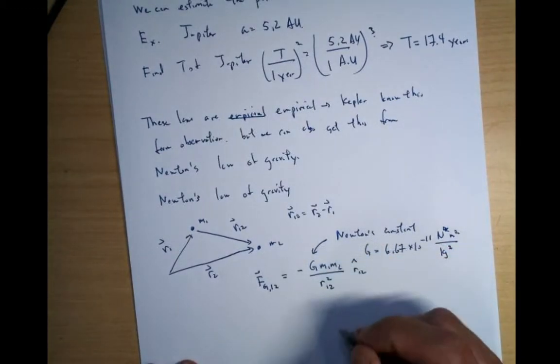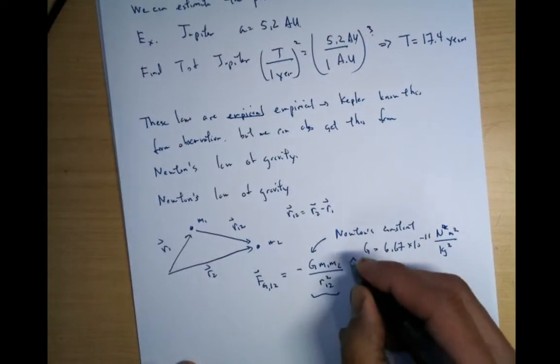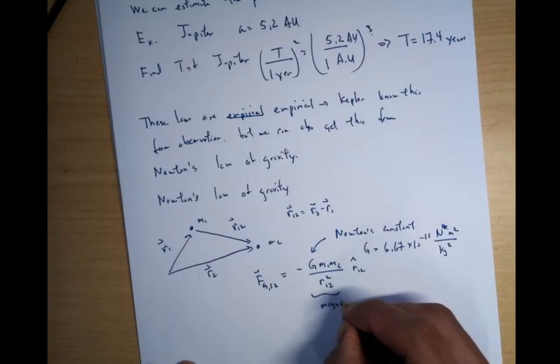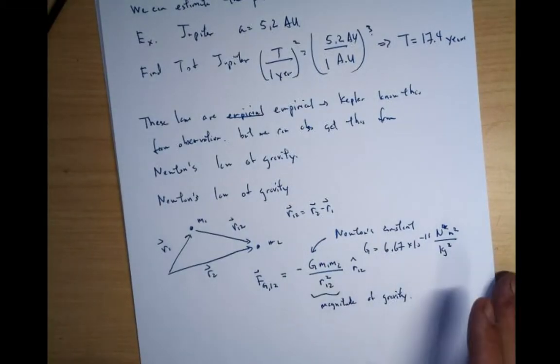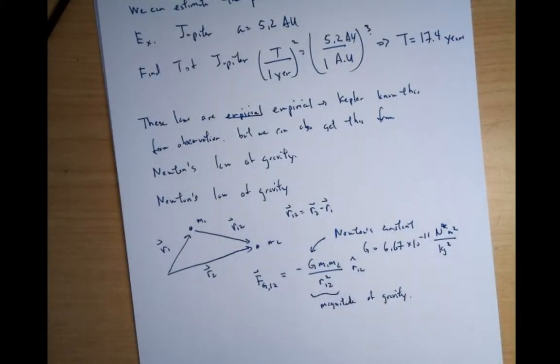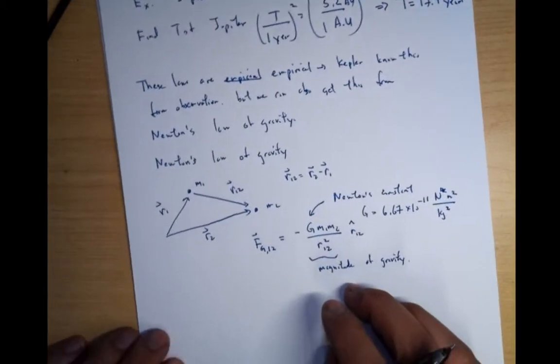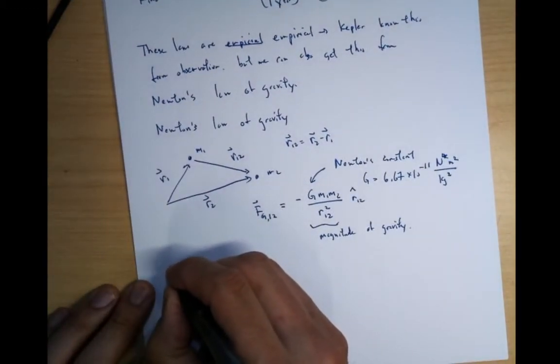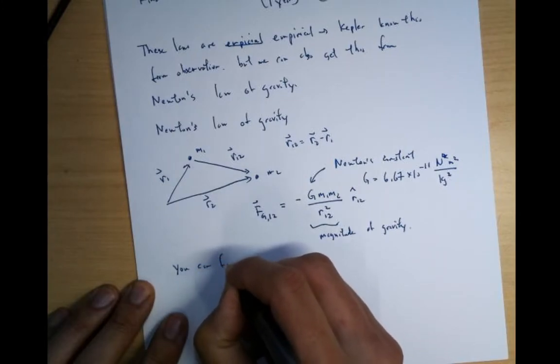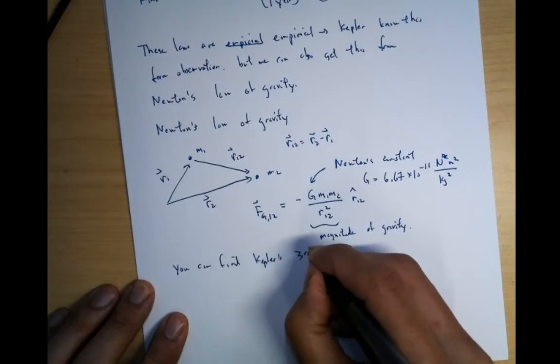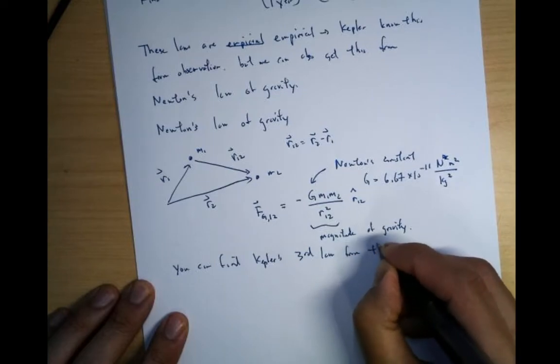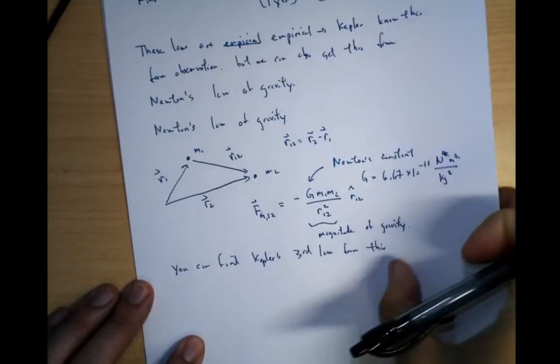These are the masses of m1, m2. This is just a unit vector. And so this right here, this entire term right here is the magnitude of gravity. So that's very nice. So you can actually figure out Kepler's law from this. Kepler's third law. That just follows basically.